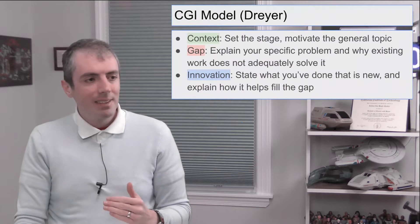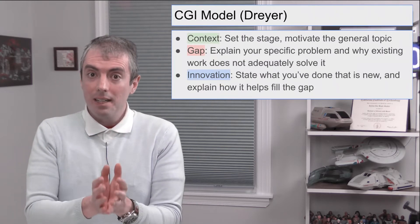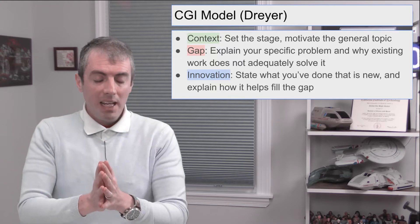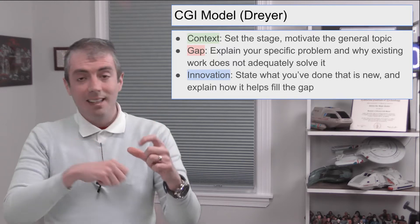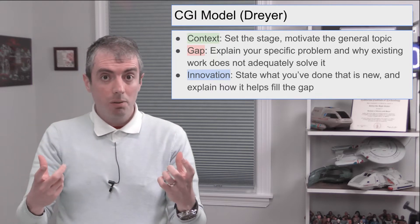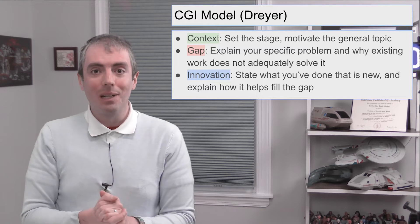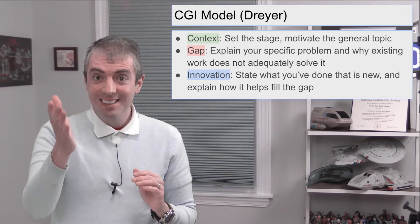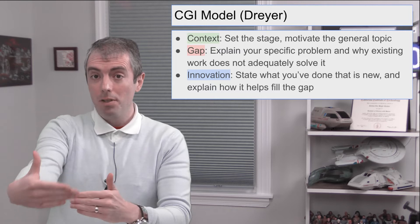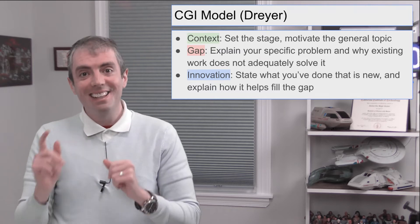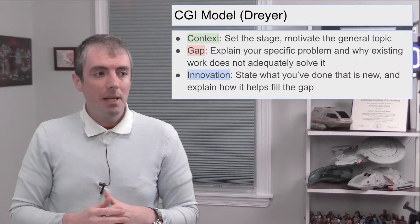The abstract is often the first thing that people see of your paper, and sometimes it's the only thing people see — they read the abstract when bidding for papers to review, or just deciding whether the paper is relevant. This is the make-or-break point to ensure you get the right reviewers and that people eventually read, cite, and use your ideas.